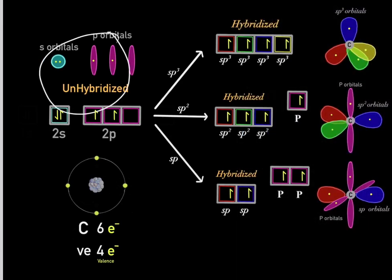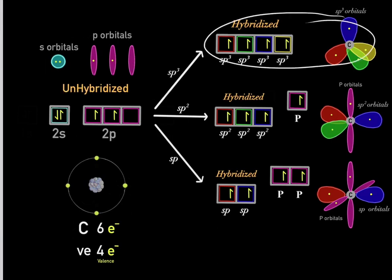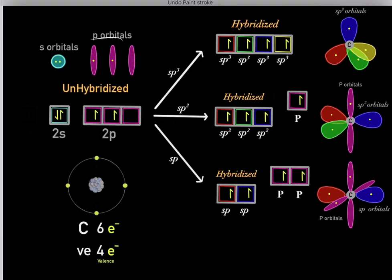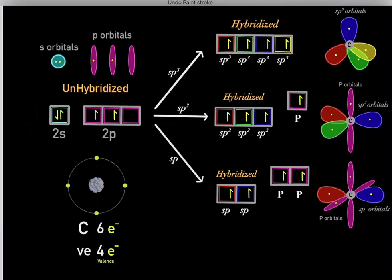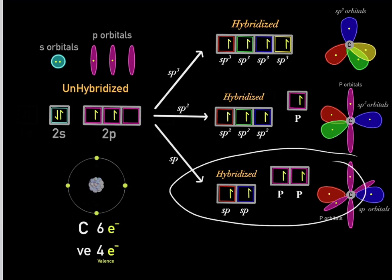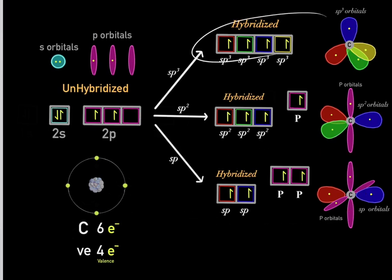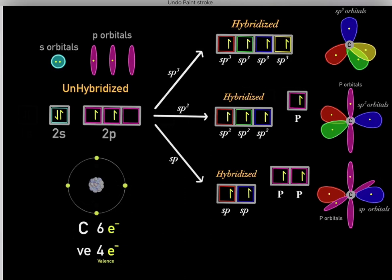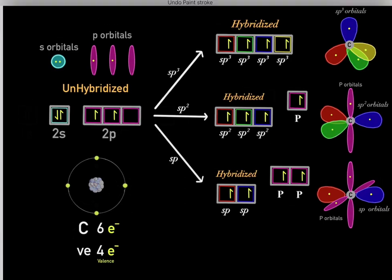In reality, what happens is these orbitals hybridize — they fuse. And there are three ways that they can fuse: they can fuse to form sp3 orbitals, sp2 orbitals, or sp orbitals. Let's talk about these three different ways that orbitals hybridize.